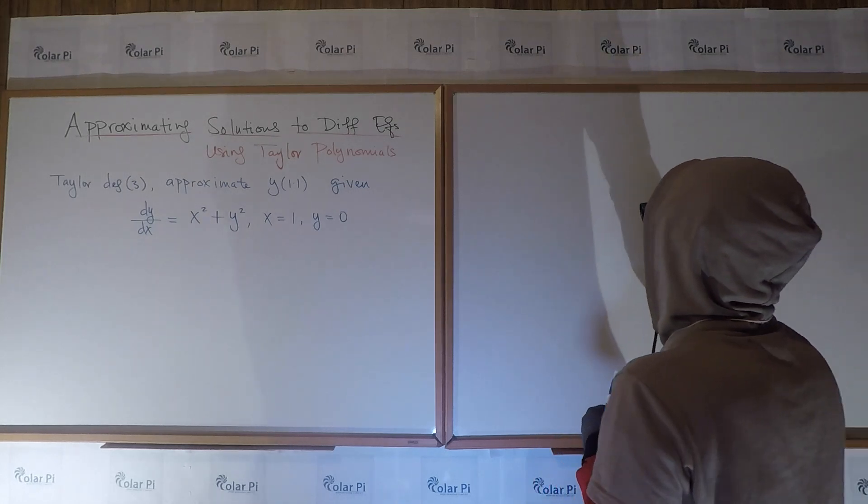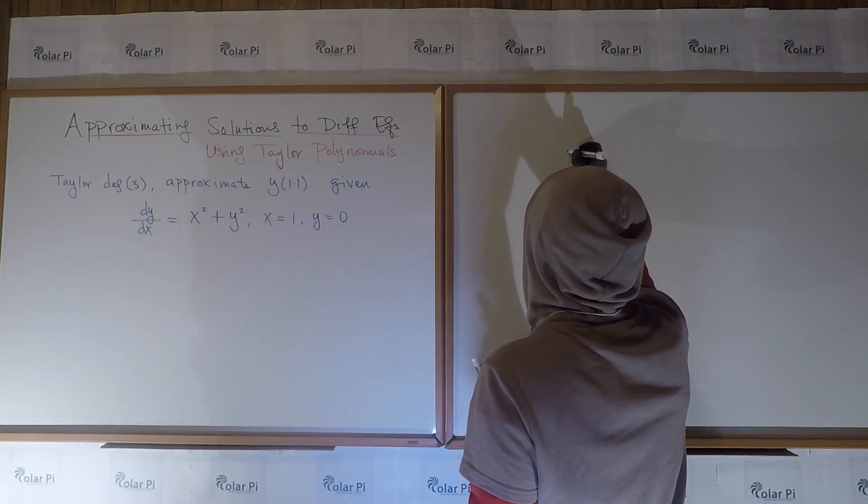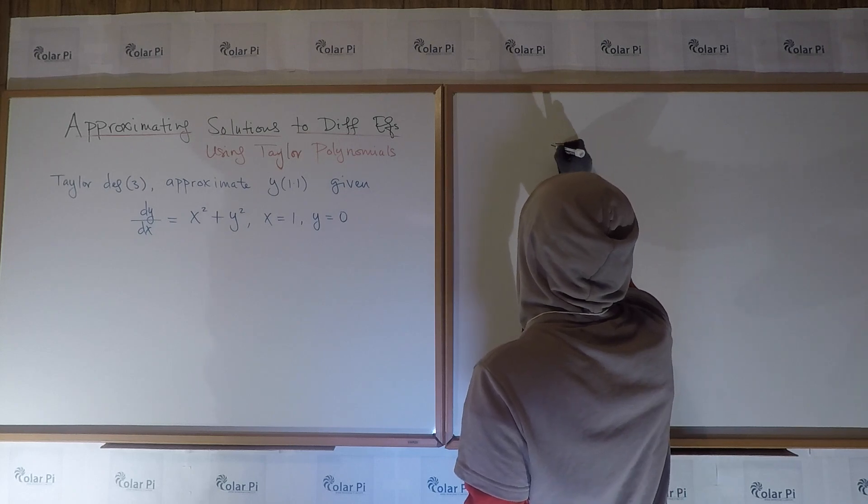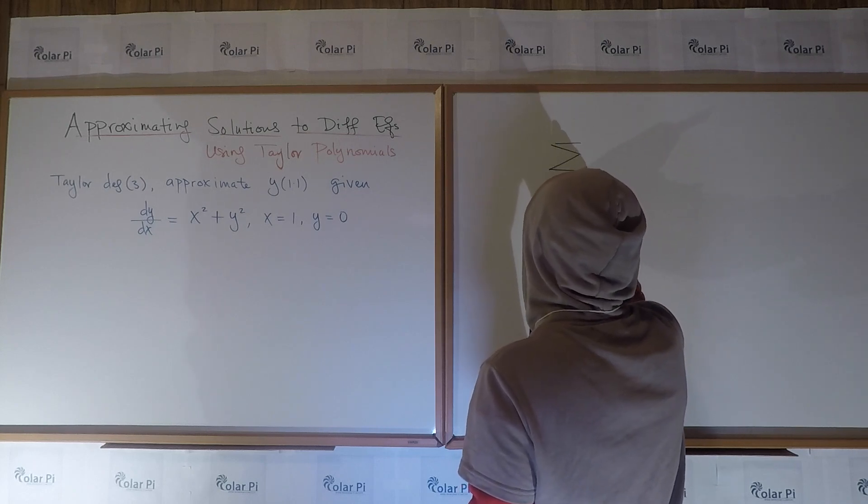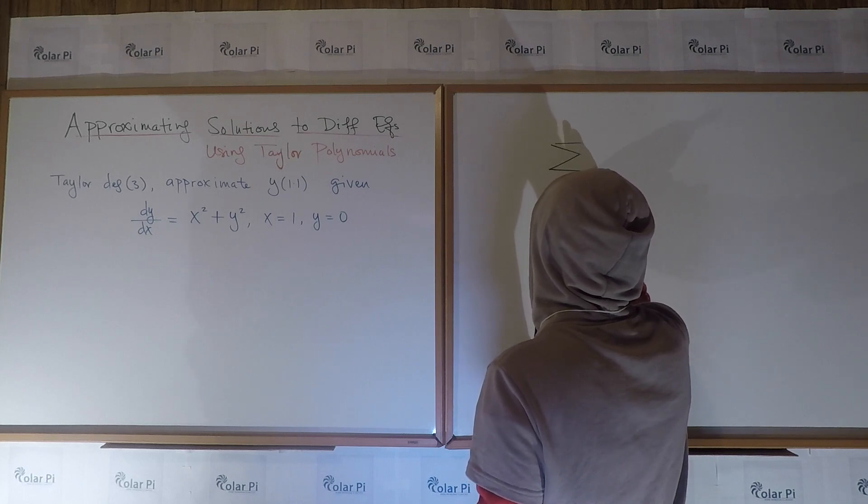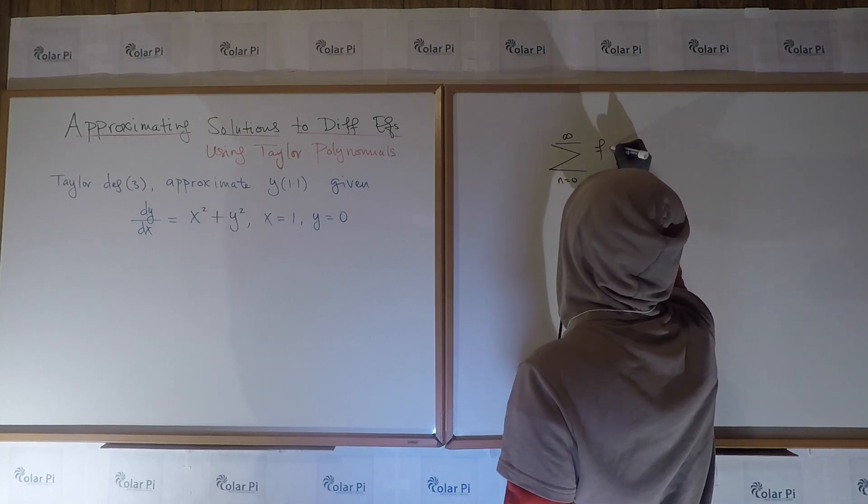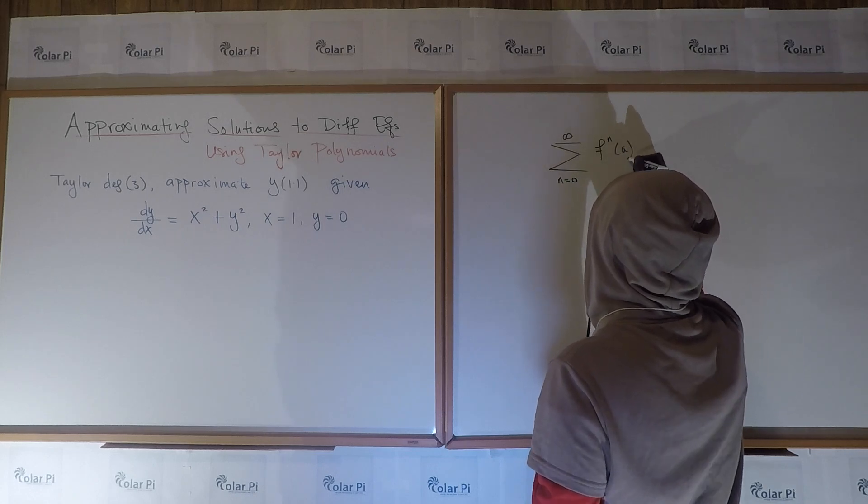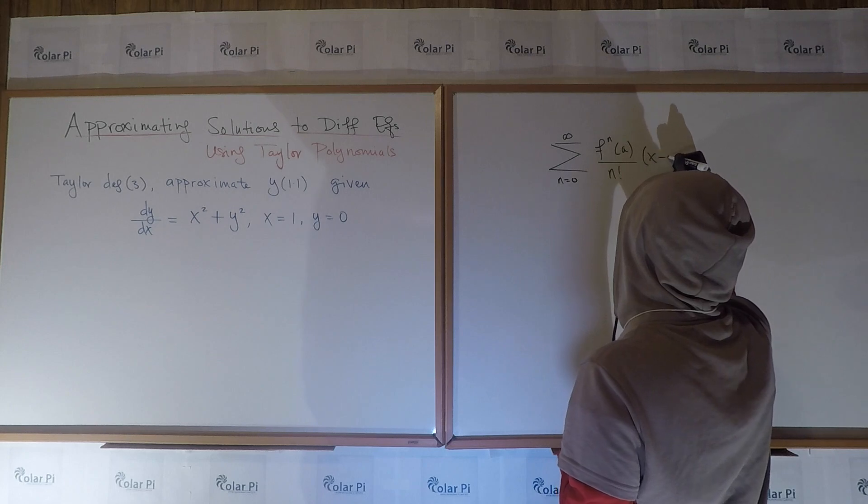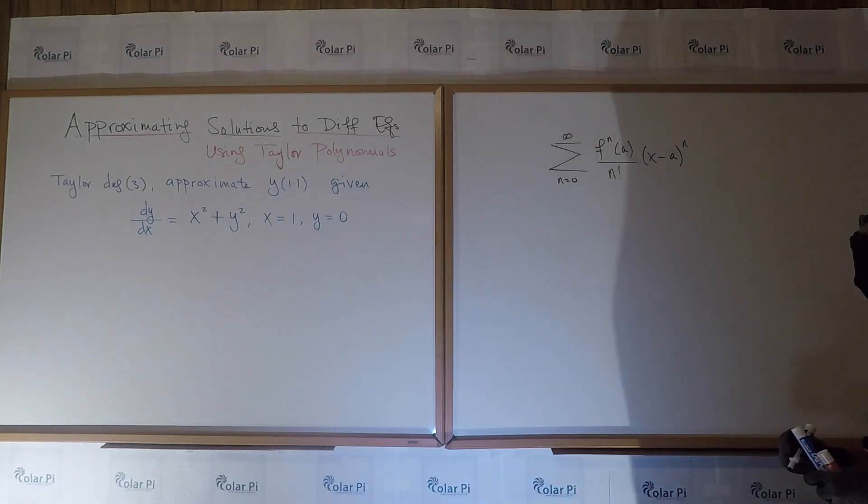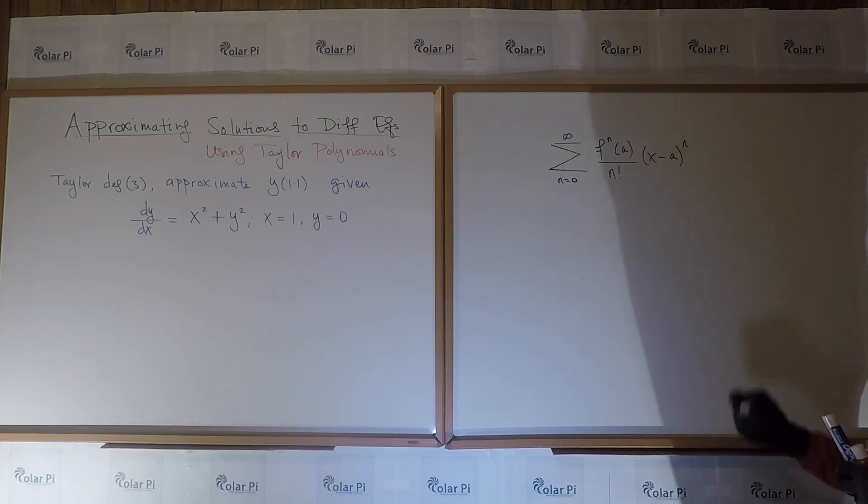recall that a Taylor polynomial of degree 3 or any degree would be a Taylor polynomial would be this infinite sum. It would be n equals 0 to infinity, f^n(a) over n factorial times (x minus a) to the n. That's Taylor series.